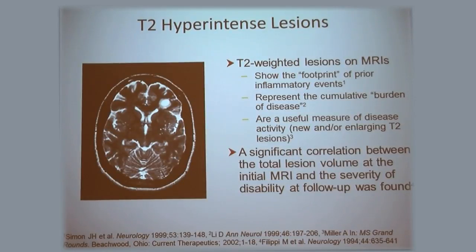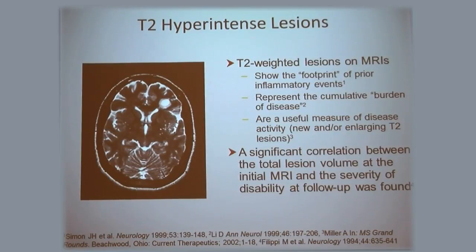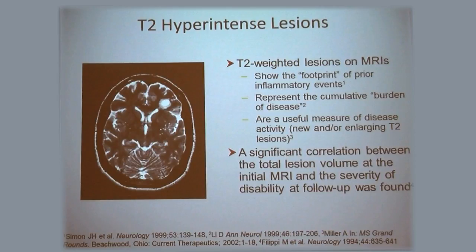These are T2-weighted lesions. This is a plaque here, and there are some smaller plaques around here as well. When we do an MRI, from year to year we compare — we go back and look at the old one and the new one. What we want to know, besides enhancing lesions, is: are there more white matter lesions, or have the previous white matter lesions increased in size? Both are markers that there's been disease progression.